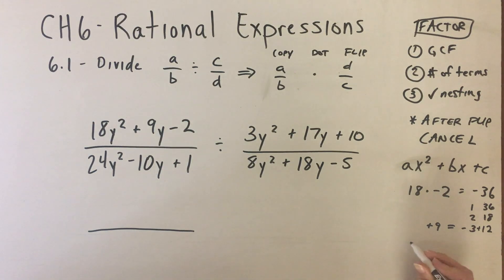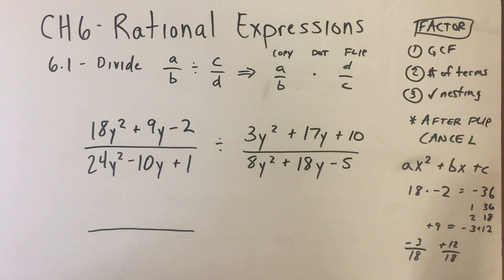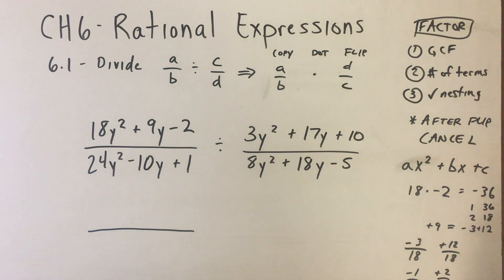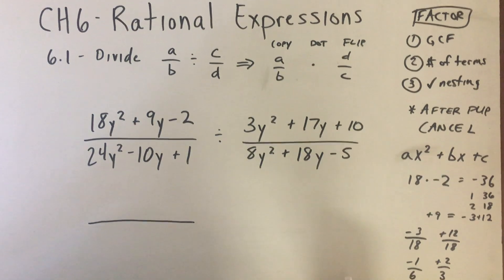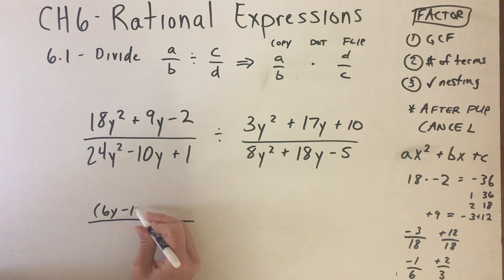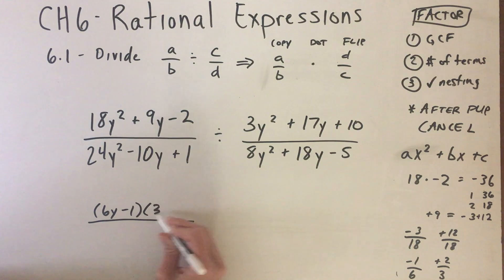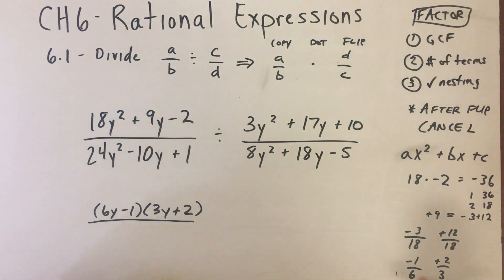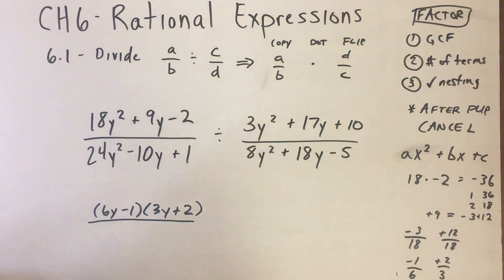Using those factors, I write negative 3 over 18 and positive 12 over 18 — writing each over A. Reducing these fractions: 3 goes into 3 once and into 18 six times, giving -1/6. Then 6 goes into both 12 and 18, giving 2/3. So the reduced fractions become the factors: (6y - 1) and (3y + 2). That was the top polynomial. Now we're going to factor the bottom one using the same steps.